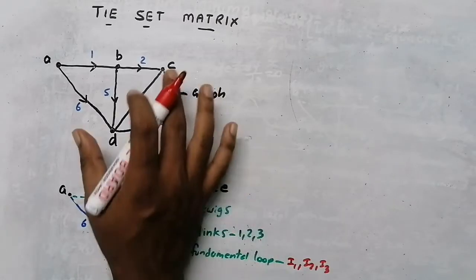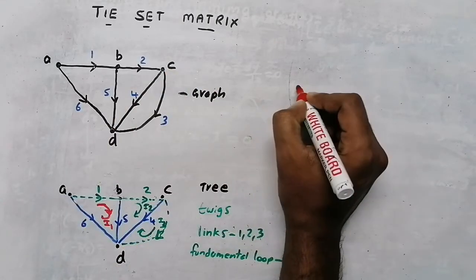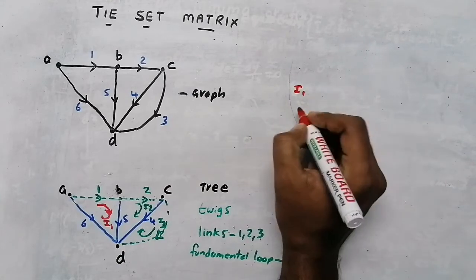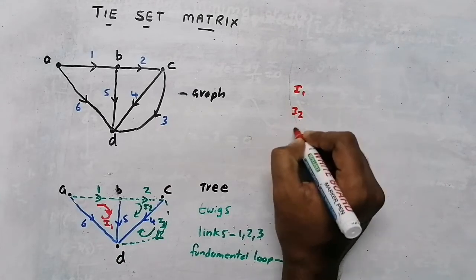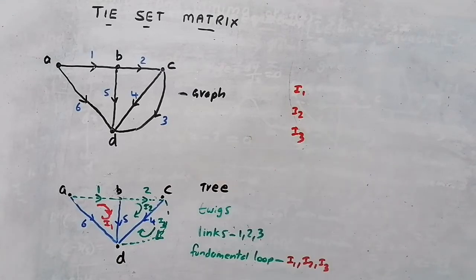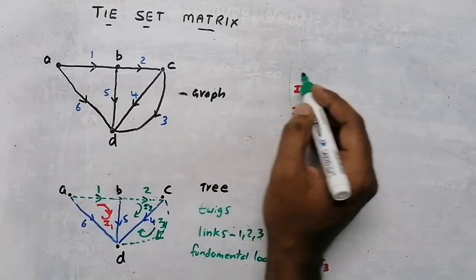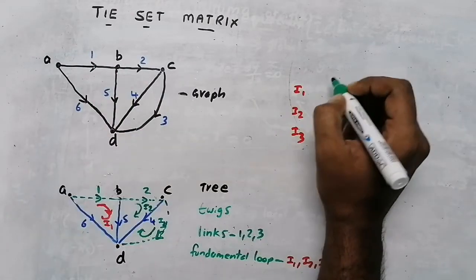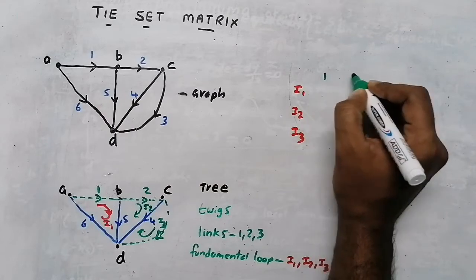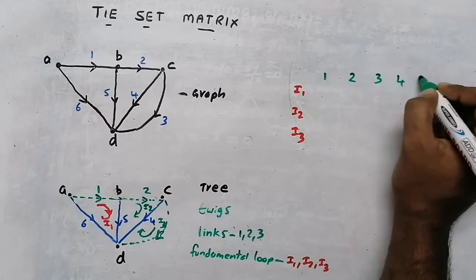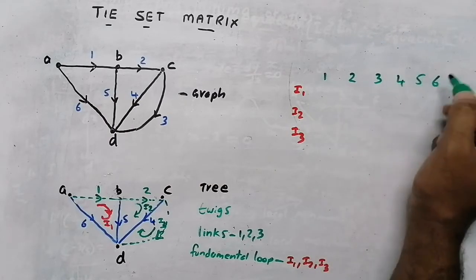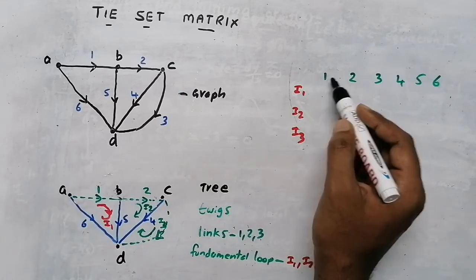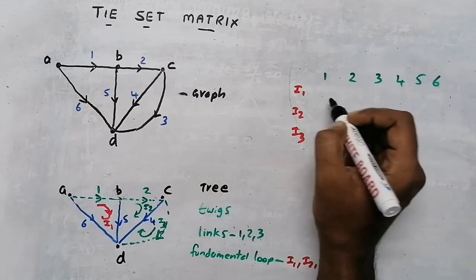What is a tie-set matrix? In the tie-set matrix we draw a matrix with loops as rows and branches as columns. There are three loops — I1, I2 and I3 — as rows. How many branches are there? 1, 2, 3, 4, 5 and 6 — so 6 branches as columns. We are going to draw this matrix now.